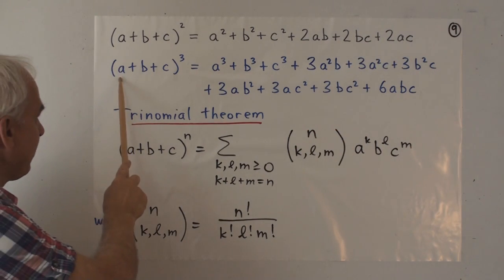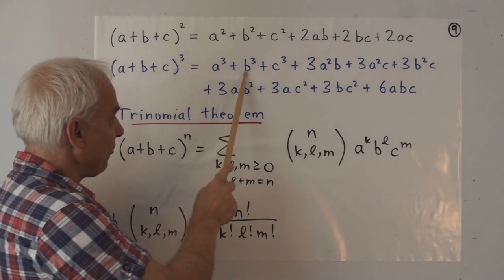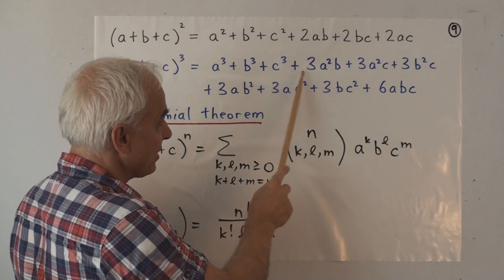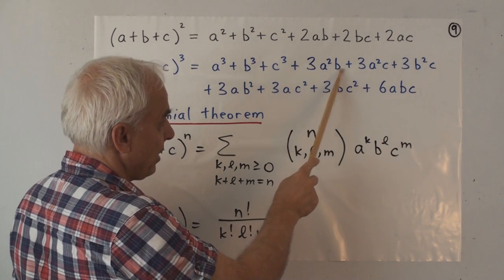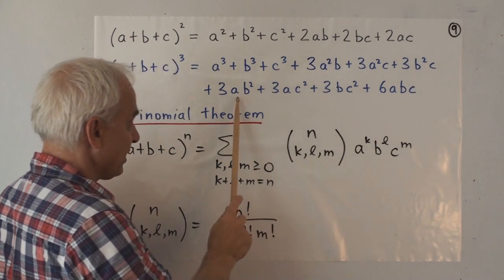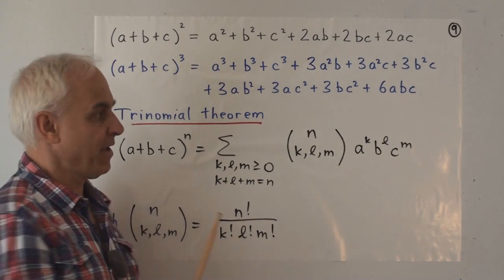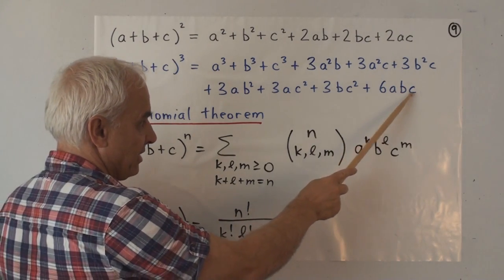When we expand a plus b plus c cubed we get a cubed plus b cubed plus c cubed plus 3a squared b plus 3a squared c plus 3b squared c plus 3ab squared plus 3ac squared plus 3bc squared plus 6abc.